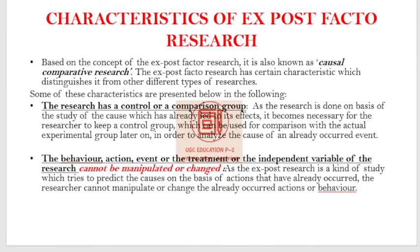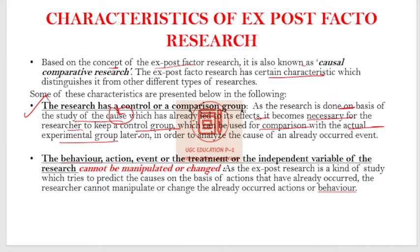Moving on to the characteristics of ex post facto research, it is also known as causal comparative research. First characteristic: the research has a control or comparison group. The study is done on the basis of what has already occurred, so it becomes necessary for the researcher to keep a control group, which may be compared with the actual experimental group later on, in order to analyze the causes that have already occurred.